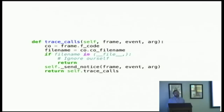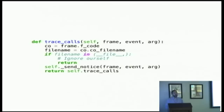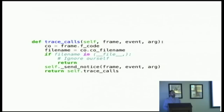The way the tracer works is it installs a function to be called every time the Python interpreter takes any action — anytime a function is called, any line of your program is executed, when a function returns, if there's an exception generated. It calls your function and tells it what's happening. It passes the stack frame so you have access to everything happening inside the other part of the program. You get information about what kind of event was happening, and for some events like return and exception there are extra arguments to pass data that won't be available in the stack frame.